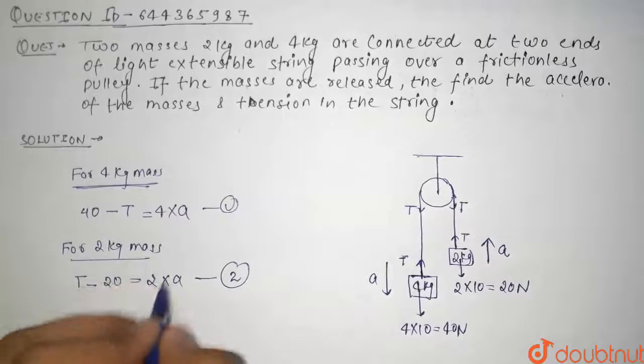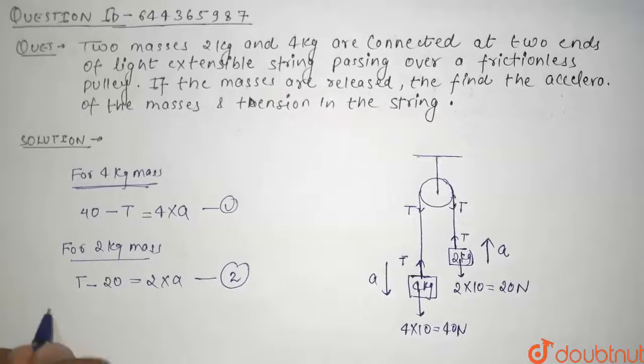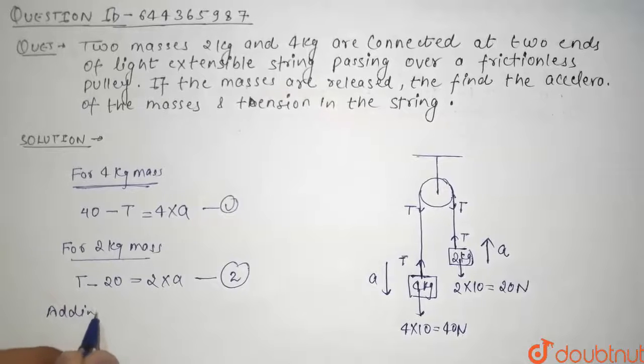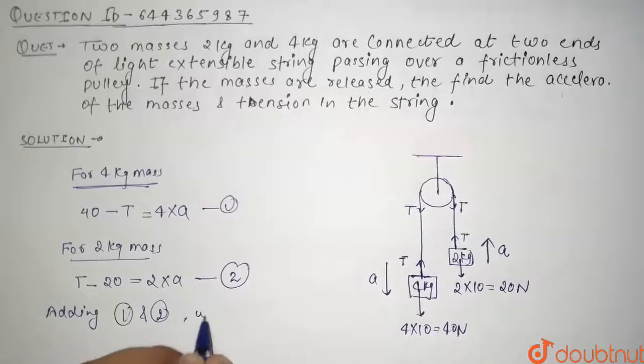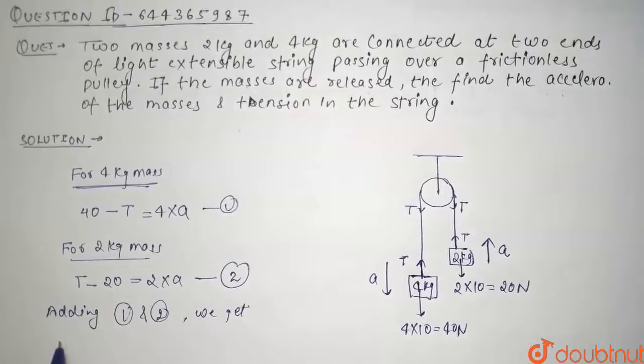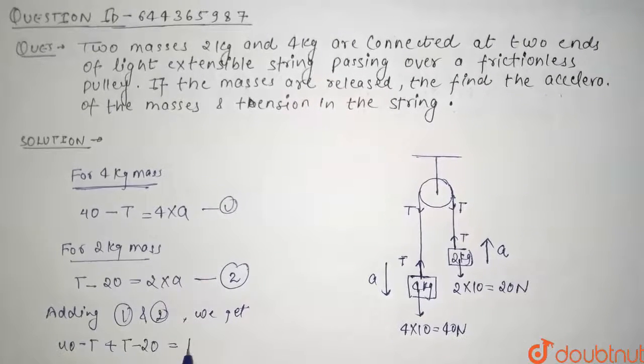Now what will we do? We will simply add both these equations. So adding both we get, adding first and second, we get 40 minus T plus T minus 20 is equal to 4a plus 2a.